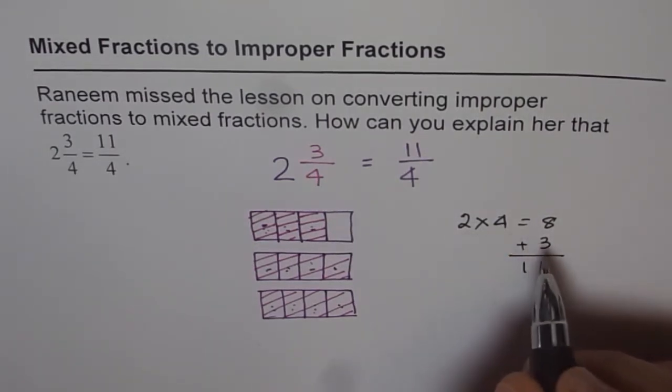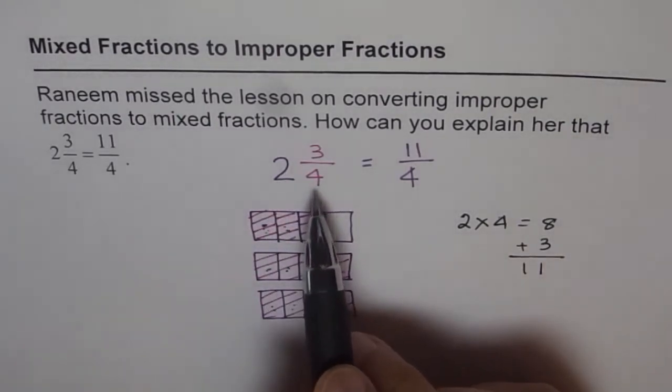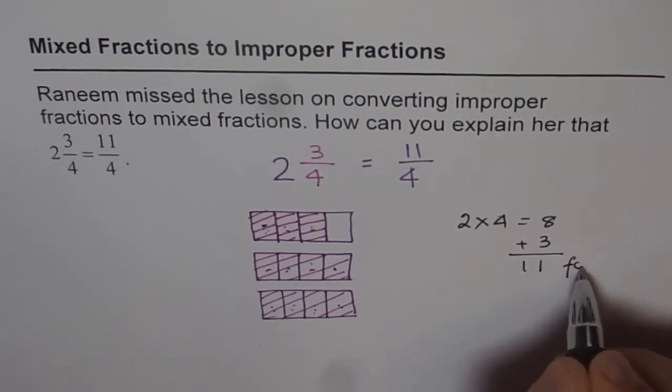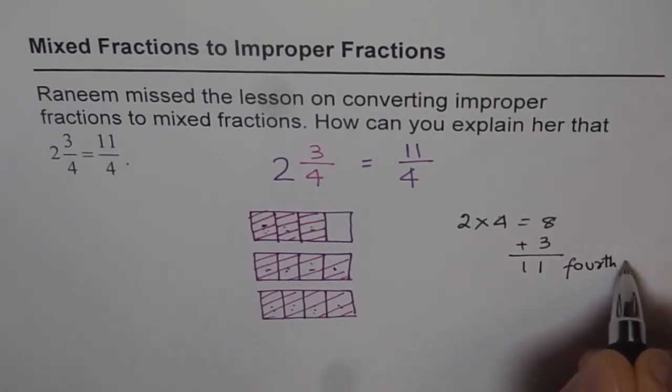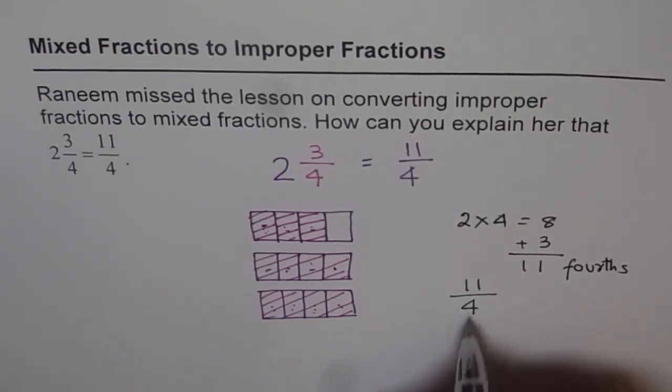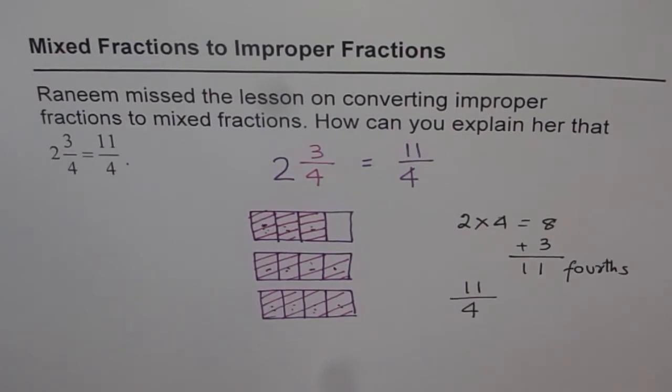That is how we can convert any mixed number in the form of an improper fraction. You get 11 fourths, which we can write as 11/4. So that is a neat way of converting mixed numbers into improper fractions.